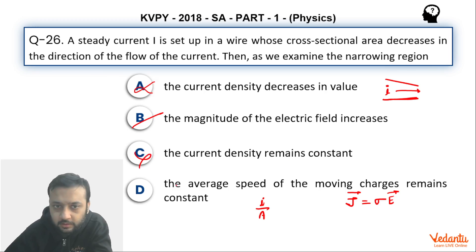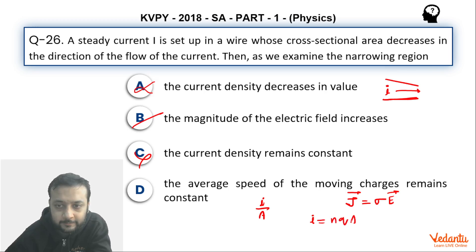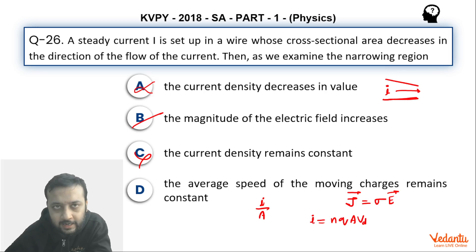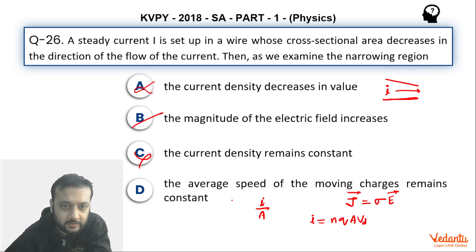Option C, that current density remains constant, is wrong. For option D, the average drift speed: from i equals NQAVD, N is constant as it represents number of charged particles per unit volume — a property of the material. I is given constant and Q, the charge on one particle, is also constant. So if A is decreasing, VD will increase. Hence option D is also wrong.